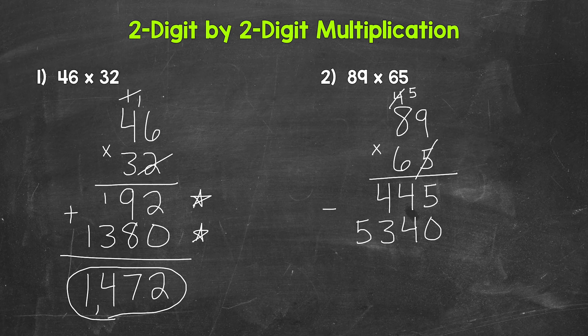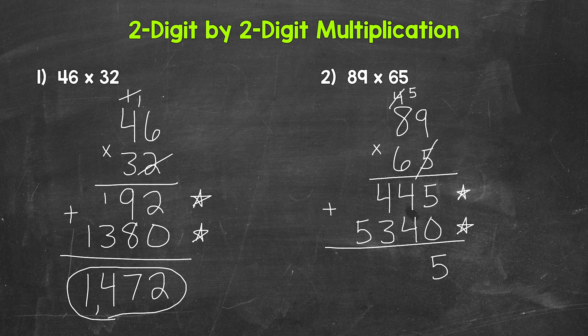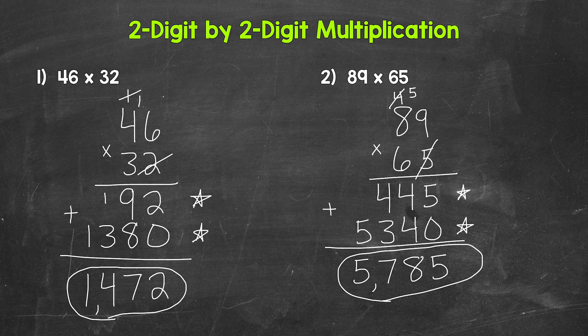Lastly, we need to add. 89 times five gave us 445, and 89 times 60 gave us 5,340. Five plus zero is five, four plus four is eight, four plus three is seven, and then we have a five in the thousands place. So our final answer is 5,785.